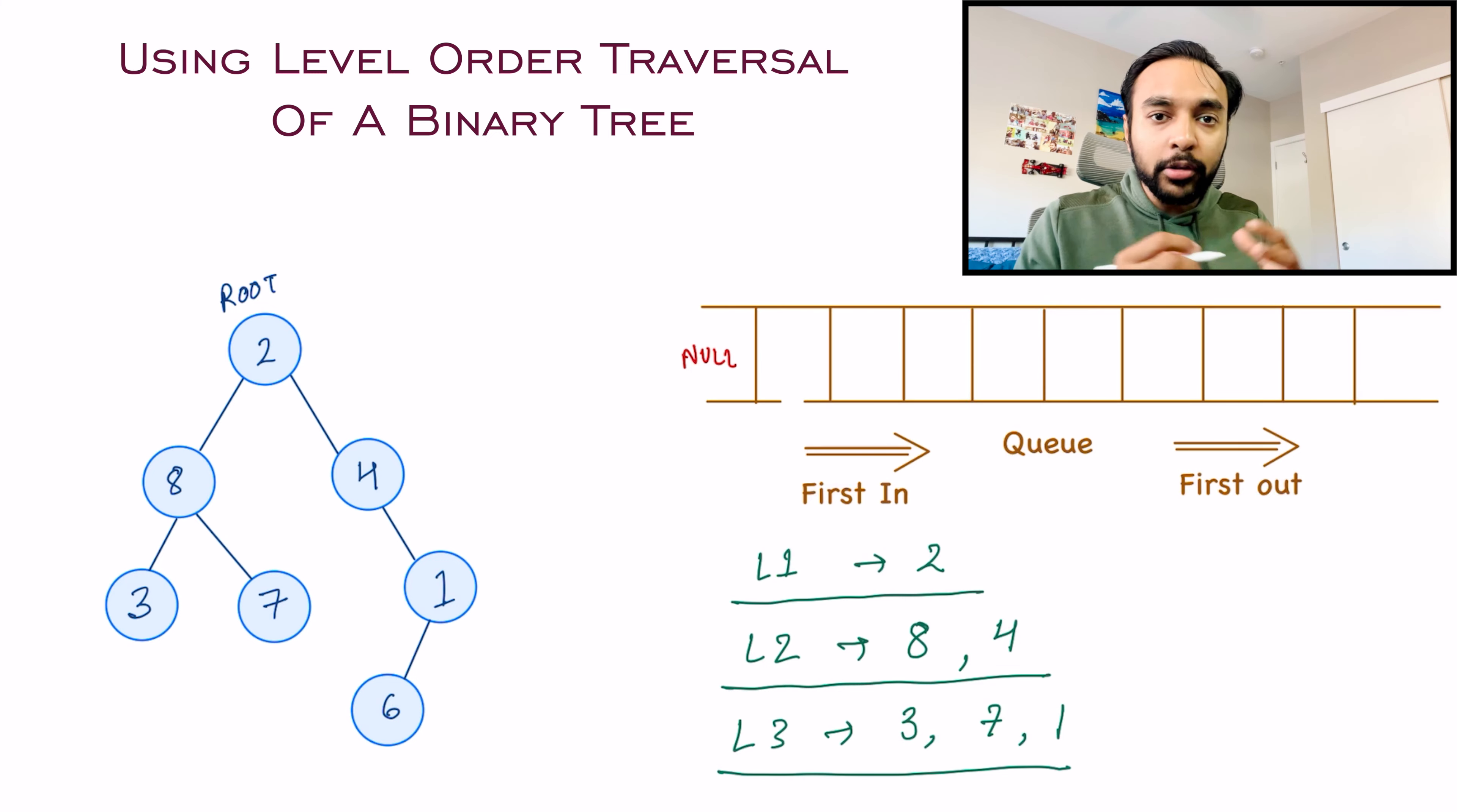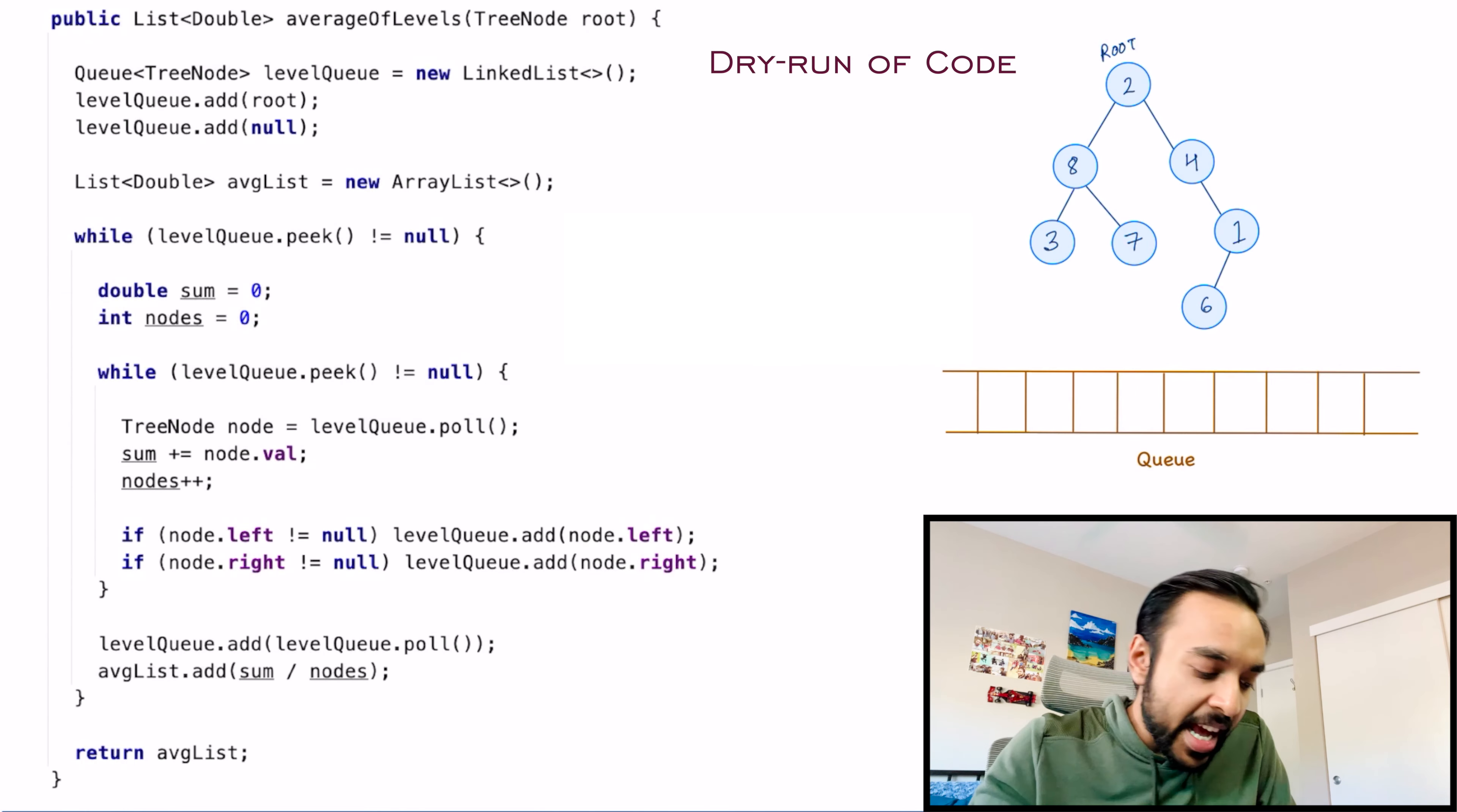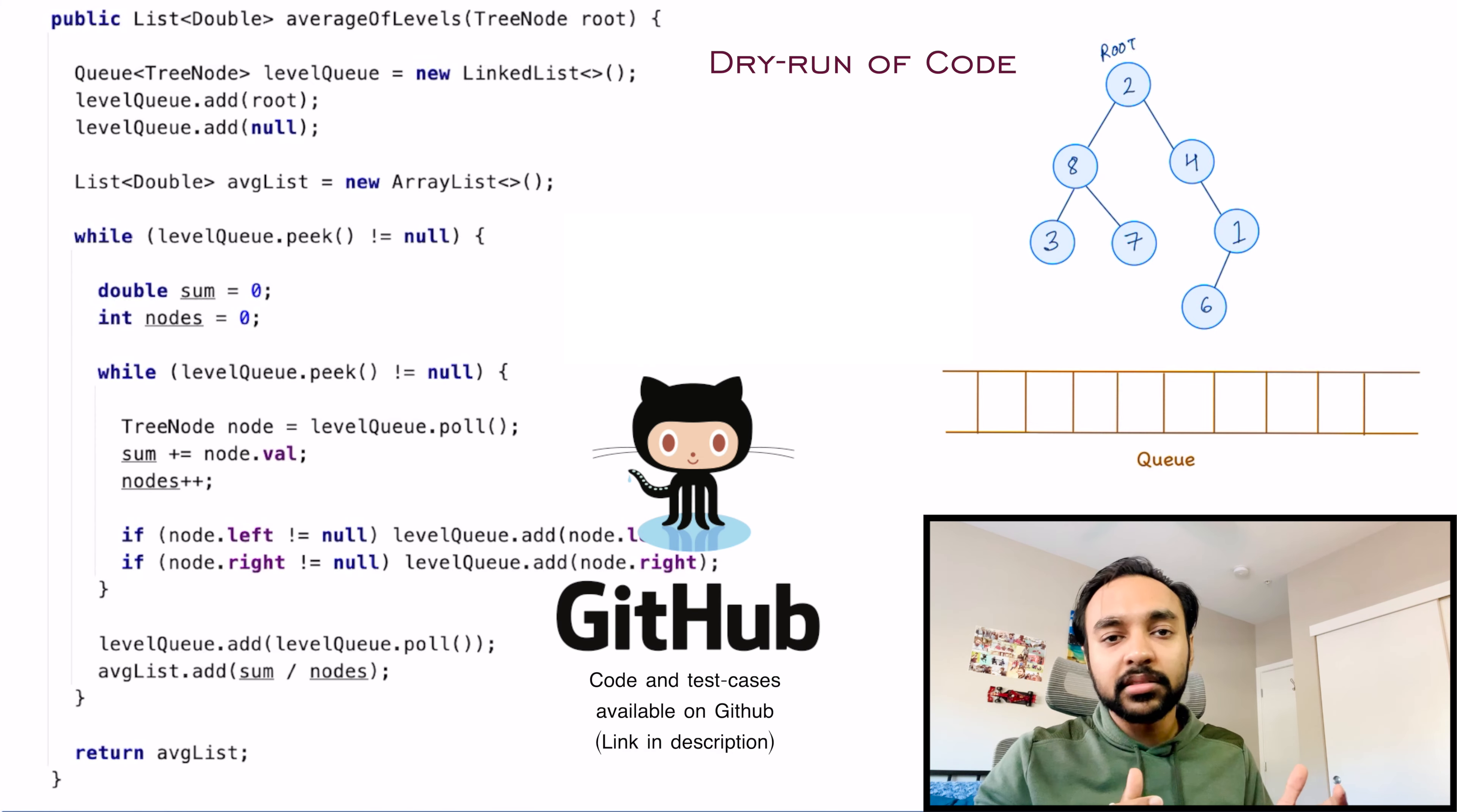So now you can start to see how things are becoming easy. You are getting all of the individual levels one by one. All you need to do is just keep on adding all of these elements, and then you can simply get the average. Based on this logic, let us quickly do a dry run of the code, and see how all of this is actually working in action. On the left side of your screen, you have the actual code to implement this solution. And on the right, I have this same sample binary tree with me, and we will try to perform a level order traversal to get the average of all levels. And by the way, this complete code and its test cases are also available on my GitHub profile. You can find the link in the description below.